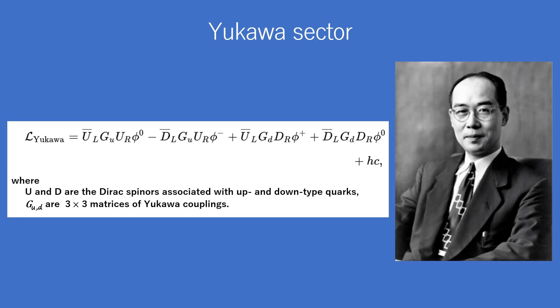The Yukawa interaction is used in the Standard Model to describe the coupling between the Higgs field and massless quark and lepton fields. Through spontaneous symmetry breaking, these fermions acquire a mass proportional to the vacuum expectation value of the Higgs field.